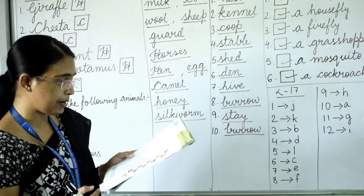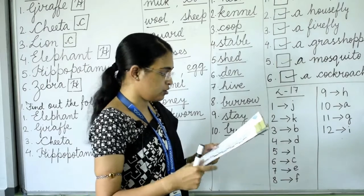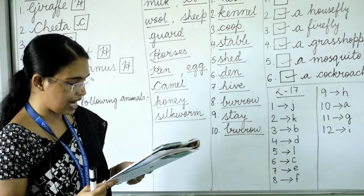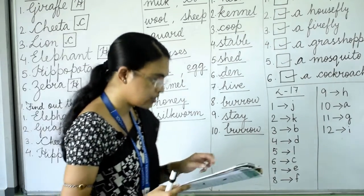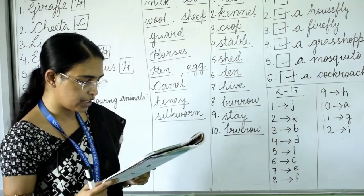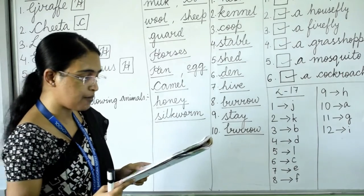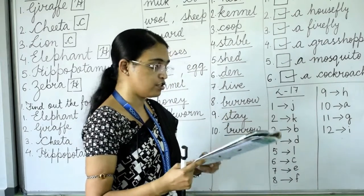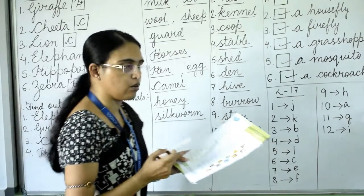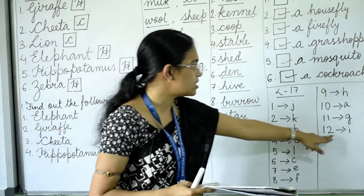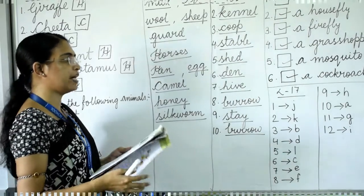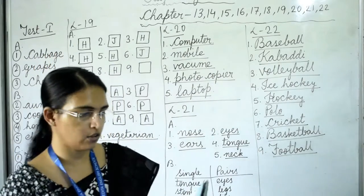Number nine: deer — the baby is called a fawn, answer is H. Number ten: lion — the baby is called a cub, answer is A. Number eleven: cat — the baby is called a kitten. Number twelve: dog — the baby is called a puppy, answer is I. After this, turn the page to lesson 18.